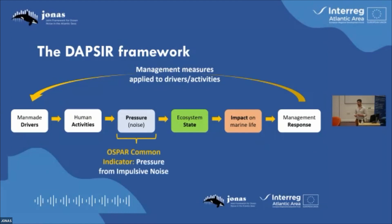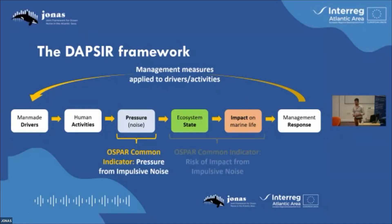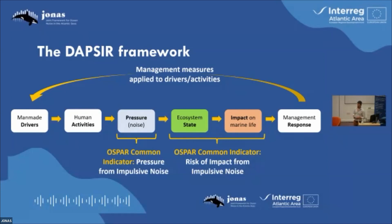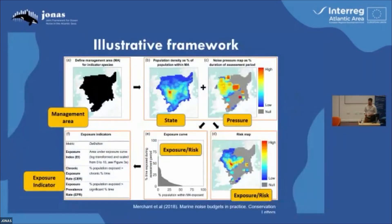So already within OSPAR, we had a pressure indicator for impulsive noise. And then a risk of impact indicator also for impulsive noise, which combines these state and impact sections. As Frank was showing first thing, this is a fairly simplified version of what we've all been showing in terms of risk mapping.